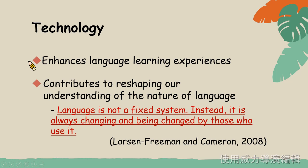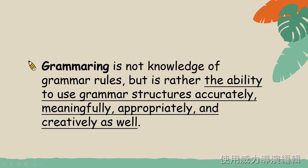時代在變,語言也在變,而資訊科技能夠幫助學生了解到這點,並給予更多相關知識,讓學生能夠即時查閱到某個單詞或是某個文法的用法和以往有何差別。 那這種跳動性思維也可以套用至文法上,也就是Grammarring. Grammarring is not knowledge of grammar rules, but rather the ability to use grammar structures accurately, meaningfully, appropriately, and creatively as well.